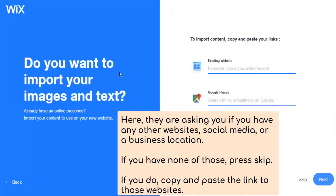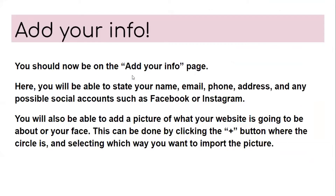They will also ask if you want to import your images and tags, and whether you have any other websites, social media, or a business location you want to add. If you have none of this, you can press 'Skip' located at the bottom right corner, but if you do, you can copy and paste the link to those websites. On the 'Add Your Info' page, you will be able to state your name, email, phone, address, and any possible social accounts such as Facebook or Instagram. You will also be able to add a picture of what your website is going to be about or your face.